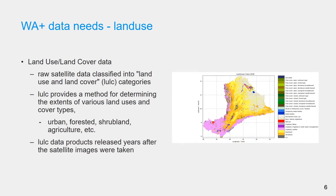The raw satellite data can be classified into land use and land cover categories. Land use and land cover categories provide a method for determining the extent of various land uses and cover types, such as urban, forest, shrubland, agriculture, etc. Land use and land cover data products are mostly released years after the satellite images were taken and could be out of date to a certain extent when they are released.